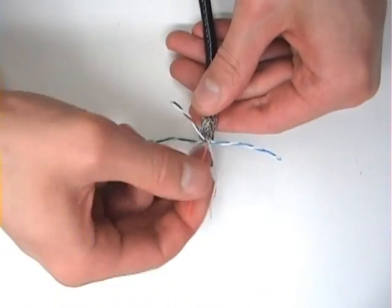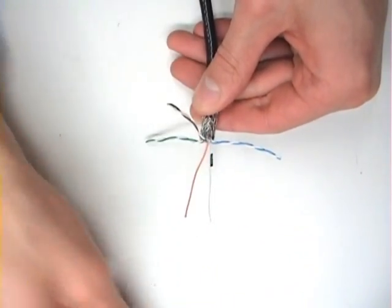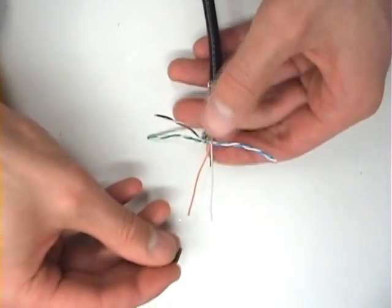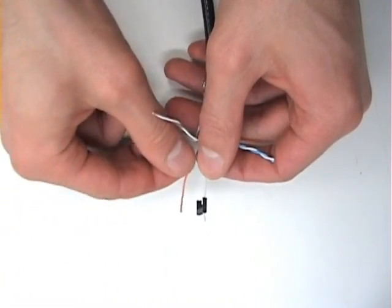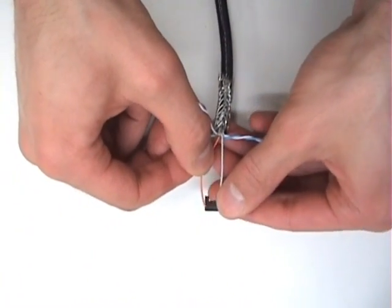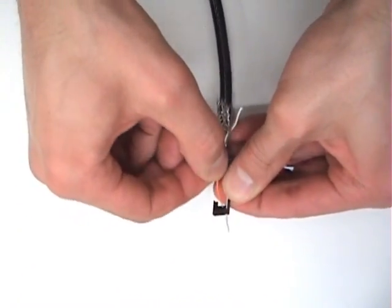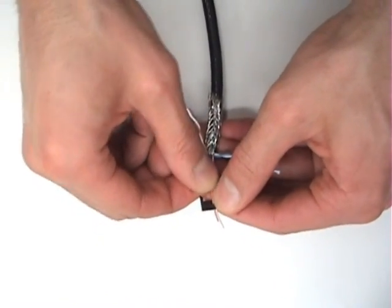Place each wire into a load bar one at a time. And note, the open end of the load bar faces you and the white wire paired with the solid orange wire is in the left-most position of the load bar, while the orange wire is placed in position number two.